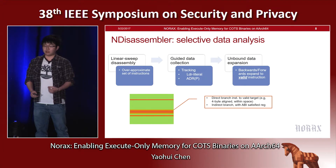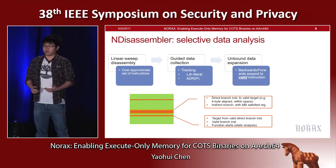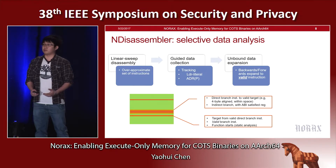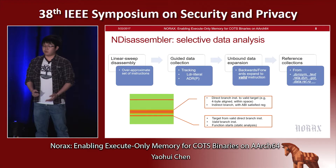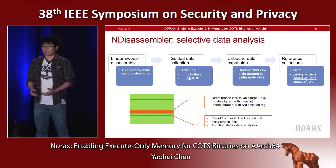During backward expansion, we stop at either a reference instruction with valid targets or an indirect reference instruction where we check the used-register certified API property. During forward expansion, we stop at either targets from a valid reference instruction, a valid branch instruction, or a sound set of function starts obtained from static analysis. After this step, a superset of the executable data is collected. NDisassembler then collects intra-module references from a list of sections. For details on what program practices result in references from these sections, please refer to our paper.